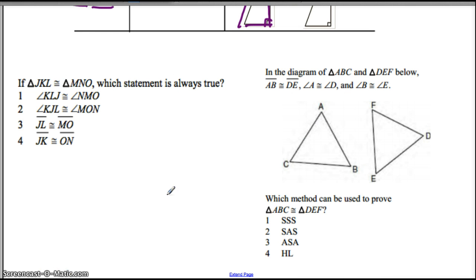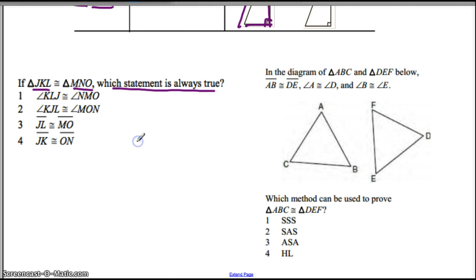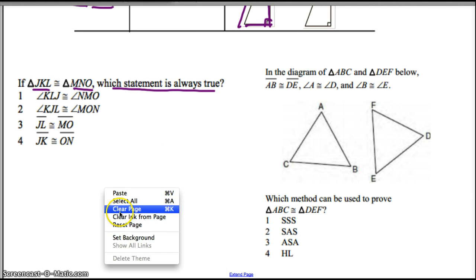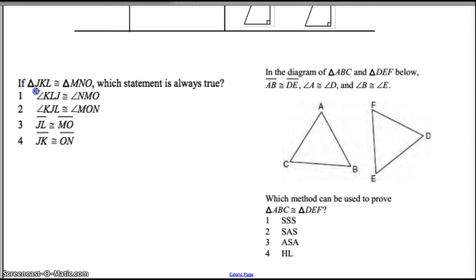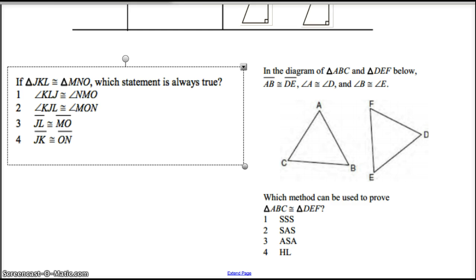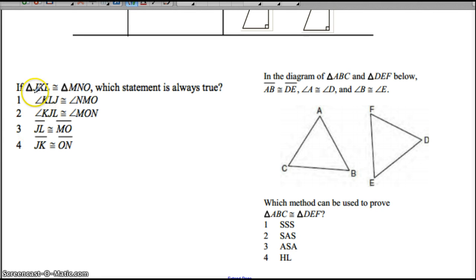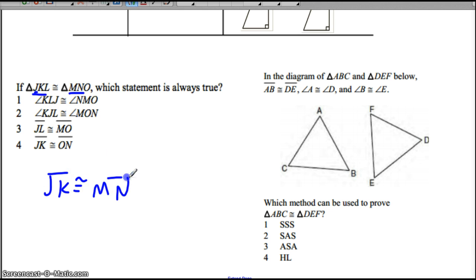Let's look at a practice problem. If triangle JKL is congruent to triangle MNO, which statements are already true? Well, we know that these have to be in the same order. Do we know that JK is congruent to ON? If we look at JK, JK has to be congruent to MN, because those are what's in the same positions. So JK is not congruent to ON — it's in a different position.